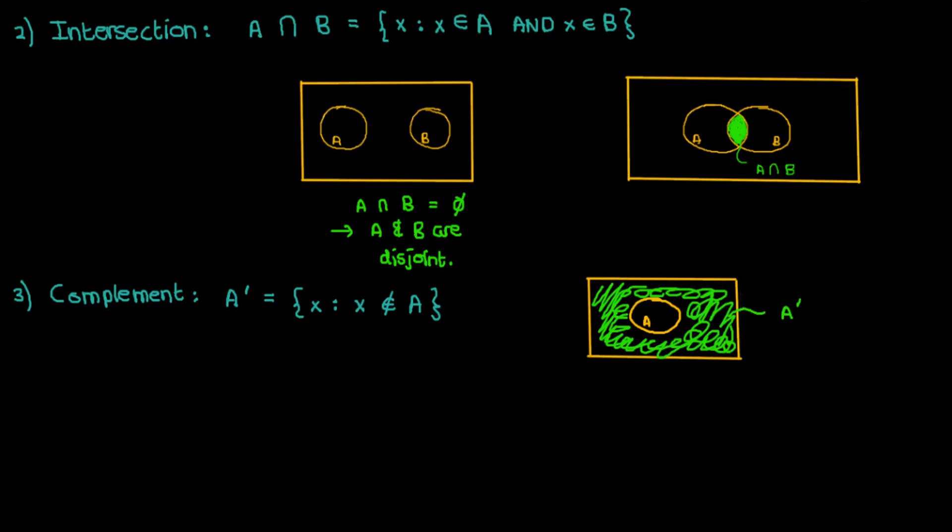Now there's another type of complement, which is the complement of A relative to B, denoted by B backward slash A. What this set means is all the elements in set B that do not belong to set A. Again, the idea here is that in this Venn diagram, the complement of A relative to B would be this shaded region in set B that does not overlap with set A.